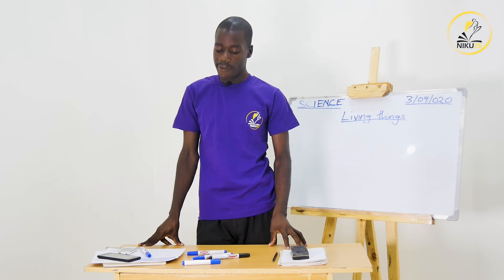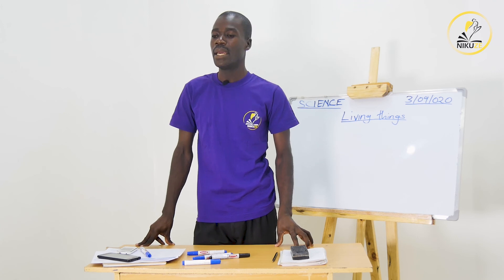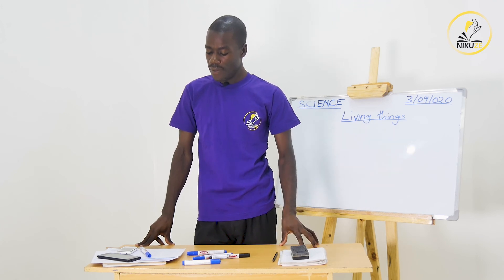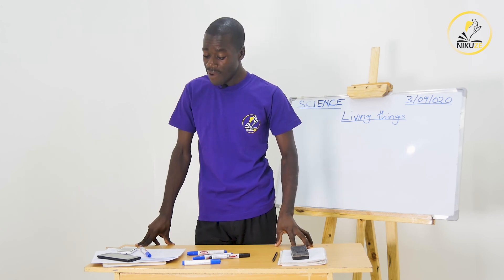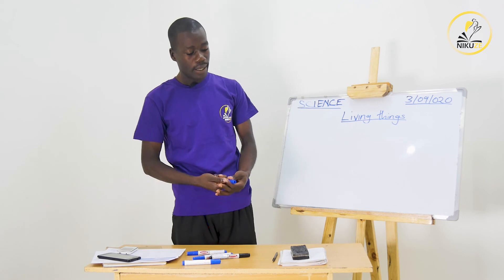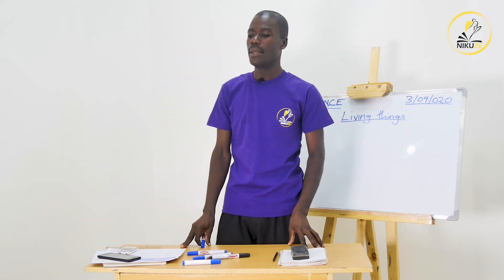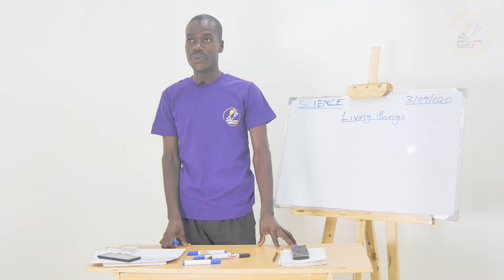Therefore, learners, you should be able to identify living things and non-living things within your locality. Are you able to mention them one by one? You can name others — books, pen, or any other thing you know is a non-living thing. That is the end of the first lesson.